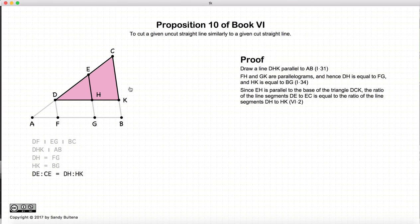Now let's look at this triangle CDK. In this triangle CDK, we have a line EH that is parallel to the line CK. So according to Proposition 2 of this book, the ratio of DE to EC will be equal to the ratio of DH to HK. Again, that's from Proposition 2 of this book.